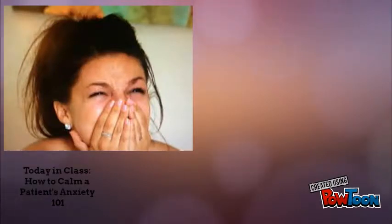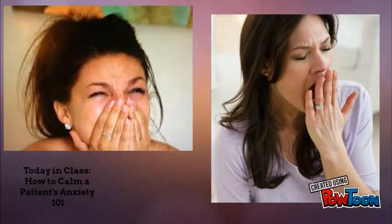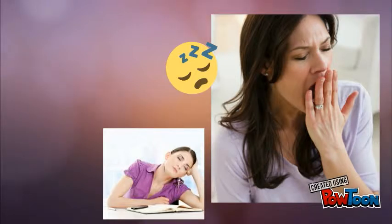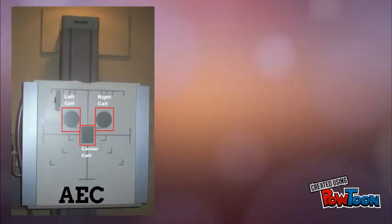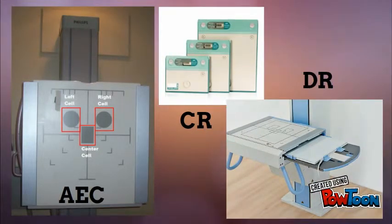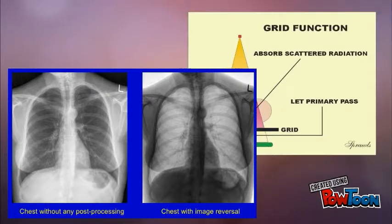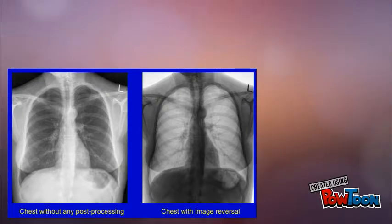Tiara still seemed very anxious, so Derek decided to help calm her nerves by telling her about radiography equipment operation and quality assurance. He found that talking about such topics tended to help calm patient nerves, and sometimes even put them to sleep. He explained how automatic exposure control worked, the difference between CR and DR image receptors, how grids were used to absorb scattered radiation, and how he could post-process the images on a display monitor after they had been acquired.